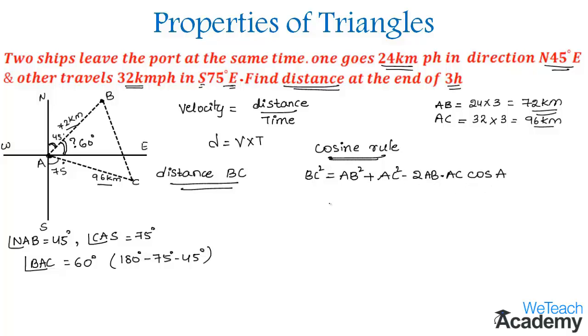And then substituting all the values of AB, AC in the formula, we get 72² plus 96² minus 2 into 72 into 96 into cos A.